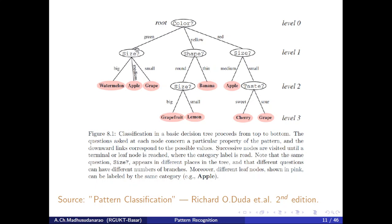If the color is green and the size is medium, that is a green apple. If the color is green and size is small, that is a green grape. Instead of green, if the answer is yellow, then my next node is shape rather than size.